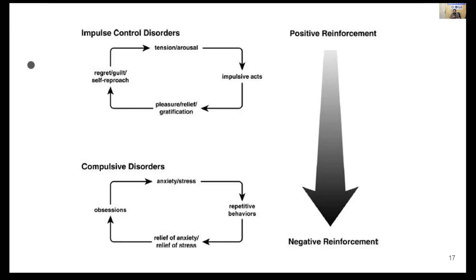In the initial stage of substance use, the person acts impulsively — they take the substance, experience euphoria, and then indulge again to re-experience that euphoria. In the later period, after one or two years, it shifts to compulsive use. Now the person is already in a negative state; as soon as they are not using the substance, there is dysphoria, anxiety, and stress. To overcome substance-withdrawal-related anxiety and stress, the person starts using again. Hence there is positive reinforcement initially, then negative reinforcement subsequently.